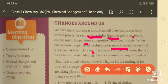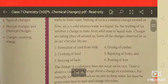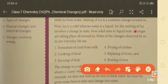Here is an example: we know that ice melts to form water. The melting of ice is a common change around us. Now, ice is a solid and water is a liquid, so the melting of ice involves a change in state from solid to liquid.